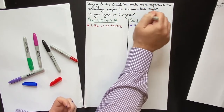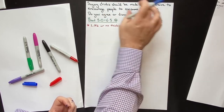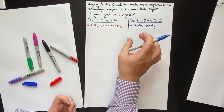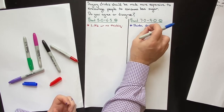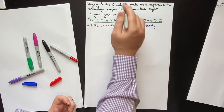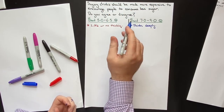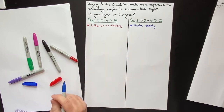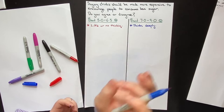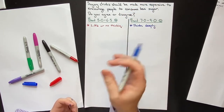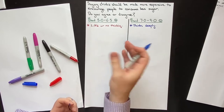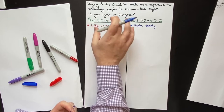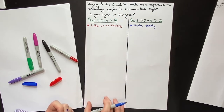The high-scoring student reads the question, fully understands it, grasps the general topic, understands the specific things they want them to write about, and totally focuses their mind on that. The low-scoring student reads it very quickly and just starts generating ideas or writing immediately. The analogy I always use is seeds — whatever seed you plant, you're going to get that plant or tree.